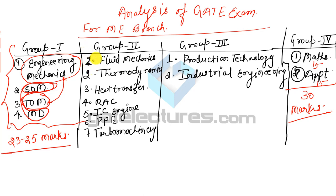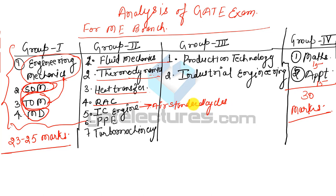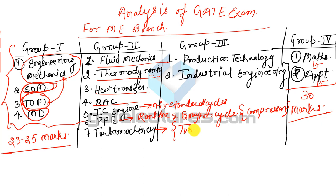Group 2 has more subjects: Fluid Mechanics, Thermodynamics, Heat Transfer, RAC, IC Engine, Power Plant, and Turbo Machinery. In IC Engine, you only need to study air standard cycles. In Power Plant, Rankine and Brayton cycles are covered, plus the newly added topic of compressor. In Turbo Machinery, only hydraulic turbines (not steam turbines) and pumps are covered. This section also contains 23 to 25 marks.